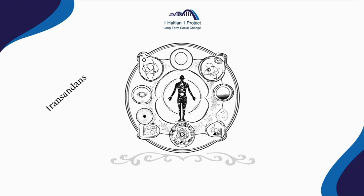Cette personne dépasse les limites apparentes que la plupart acceptent comme normales. C'est la transcendance. Et il y a des professions pour ça, comme infirmier, auxiliaire - il y a de la transcendance là-dedans. C'est un dépassement des limites apparentes, parce qu'on se met entièrement au service des autres, pour le bien-être des autres. Donc, Maslow est venu comprendre et expliquer tout ça - en plus des cinq niveaux précédents, il est venu ajouter ces trois niveaux.